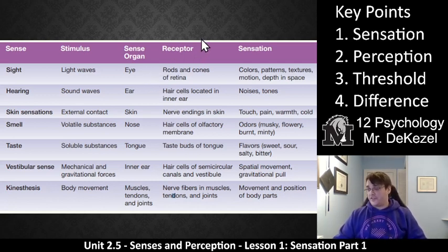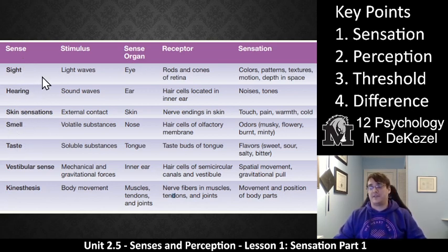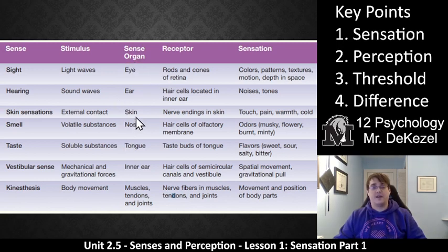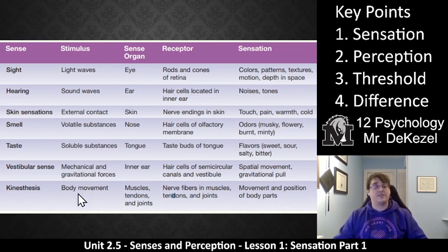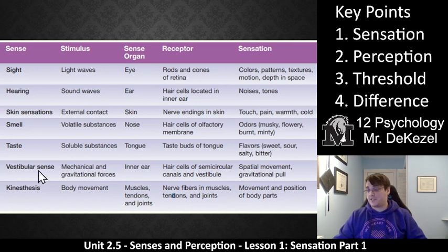Here we have a chart, and five senses are very common to us: sight, hearing, touch, smell, and taste — with the sense organs we know: the eyes, ears, nose, tongue, and skin for touch. But there are a couple I want to draw your attention to: vestibular senses, which is balance, and kinesthesis, which is where your body is — where your arms and legs are and where they need to be to keep your posture and walk straight. So there are a couple of senses here beyond the regular five that we're going to talk about in future lessons.